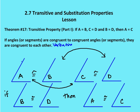The second part of the transitive property says that if A is equal to B, and C is equal to D, and B is equal to D, then A is equal to C. We're adding one more link in the chain of equality or congruence. So if angle A is congruent to B, and C is congruent to D, and B and D are congruent — that is the third link — then angle A is congruent to angle C. By the transitive property: if angles are congruent to congruent angles, then they are congruent to each other.